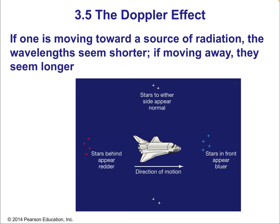Last topic: the Doppler effect. So if one is moving towards a source of radiation, the wavelength seems shorter. If moving away, they seem longer. Think about a spaceship moving towards some stars — lambda is shorter. A spaceship moving away from stars — lambda is longer. Stars that are perpendicular are unaffected because the spaceship is neither moving towards nor away from them.